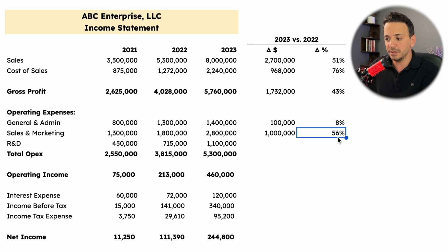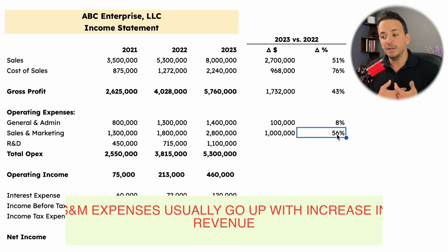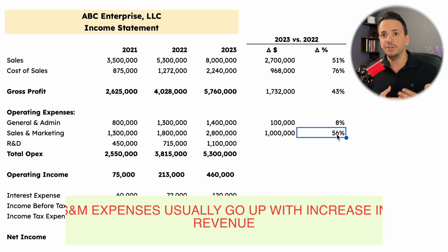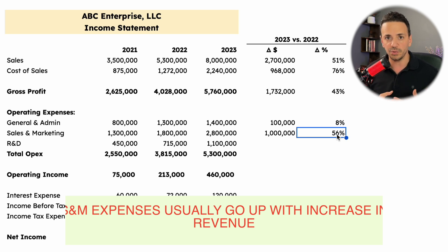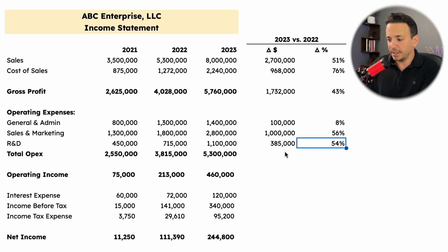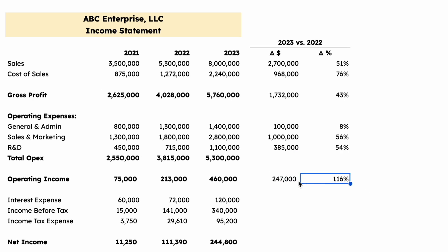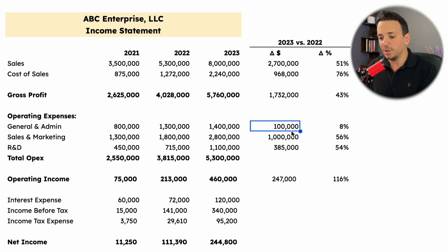Sales and marketing expenses went up by 56%, which is in line with the 51% increase in revenue — so the extra spend is yielding comparable revenue growth. If there's a big mismatch, you'd want to explain it. R&D went up by 54%, indicating the company continues to invest in research and development. Operating income went up by 116%, largely because sales grew 51% while G&A remained almost flat period over period, yielding a much higher operating income.